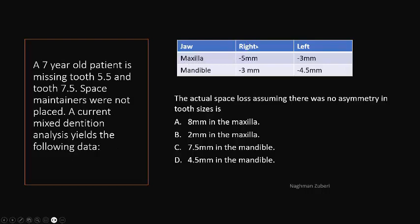In the maxilla on the right side it is minus 5 millimeters, meaning space loss is 5 millimeters, and on the left side where the tooth was present, 3 millimeters. In the mandible it is 3 millimeters on the right side and on the left side it is 4.5 millimeters, where the tooth was lost.